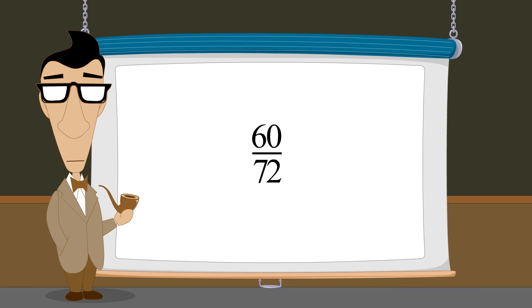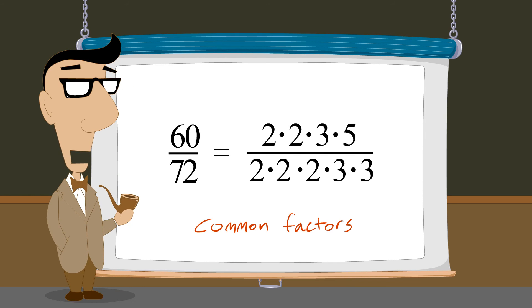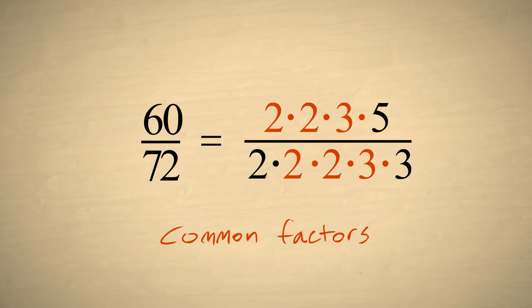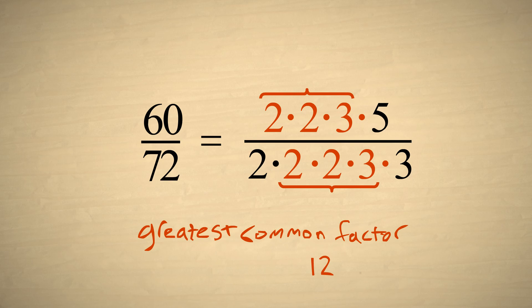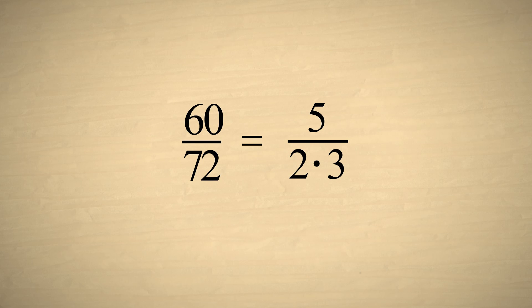We have seen that the process of reducing a fraction involves determining which factors the numerator and denominator have in common. In this example, the fraction has several common factors. These common factors include the prime numbers two and three. But we could also name other factors common to both the numerator and denominator. For example, the composite numbers four, six, and twelve. The product of all the common prime factors is the greatest common factor. In this example, the greatest common factor is twelve. And once we eliminate the greatest common factor, the fraction is reduced to its simplest form, which in this example is five-sixths.